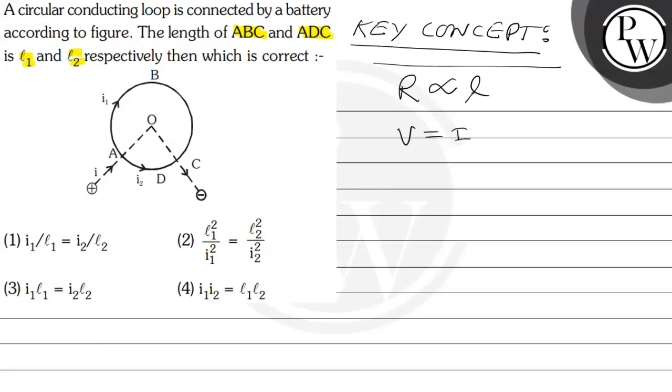We know that V equal to IR. So if V is constant, current is inversely proportional to R. More will be R, less will be the current, inversely proportional.